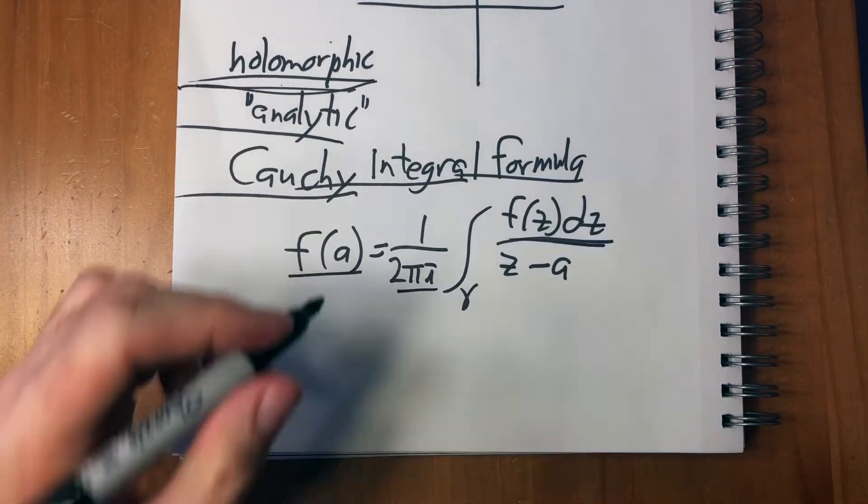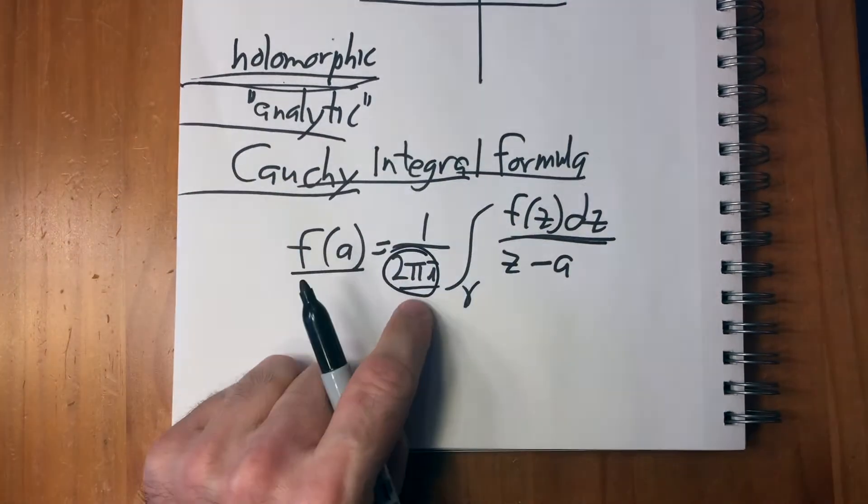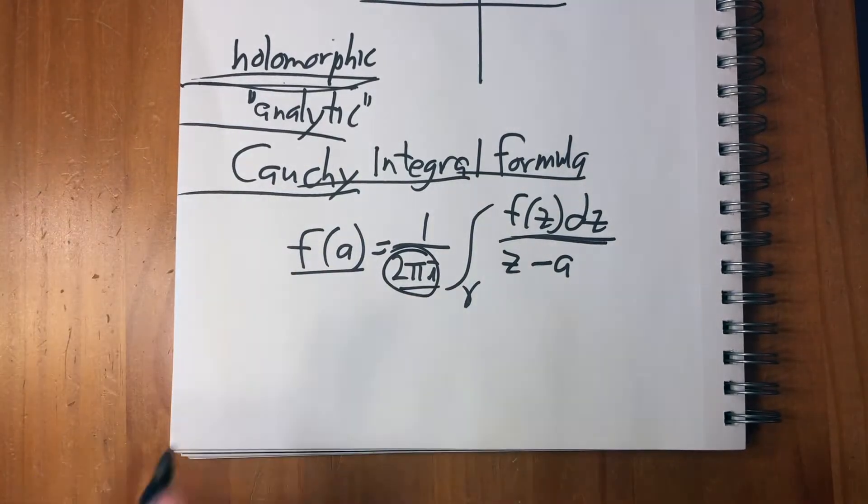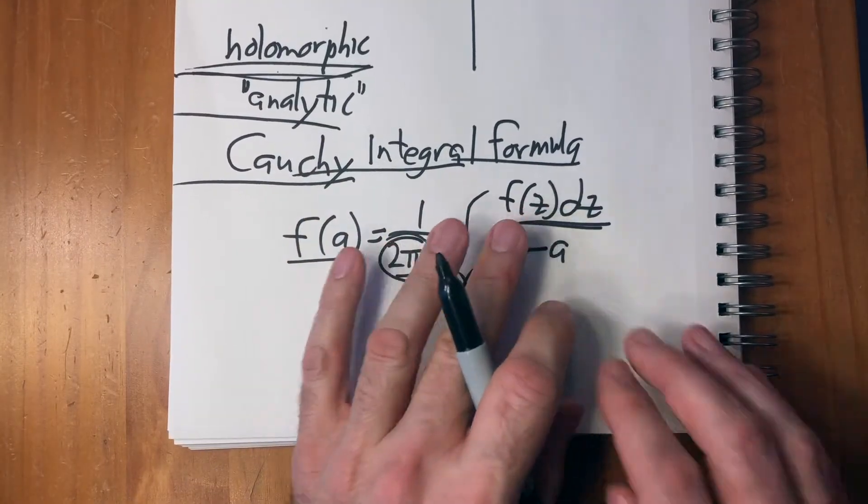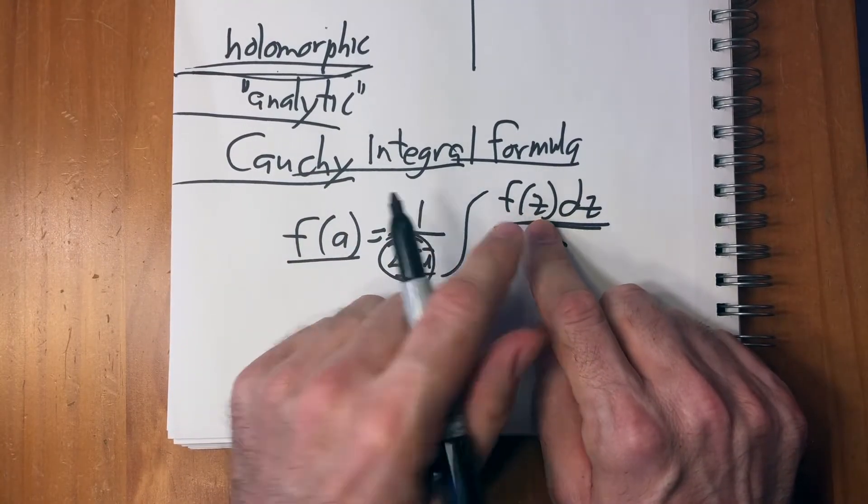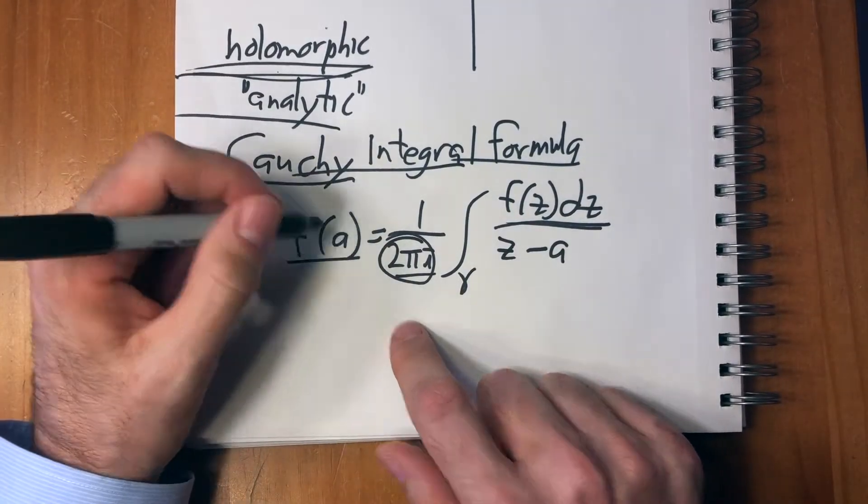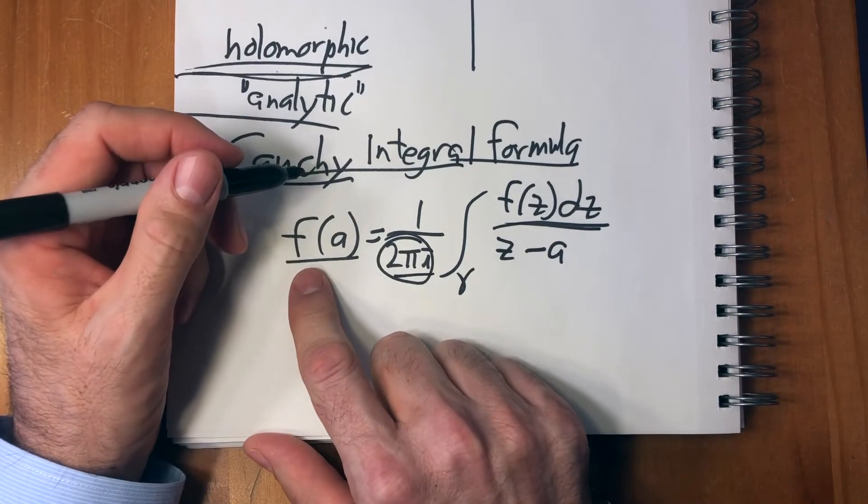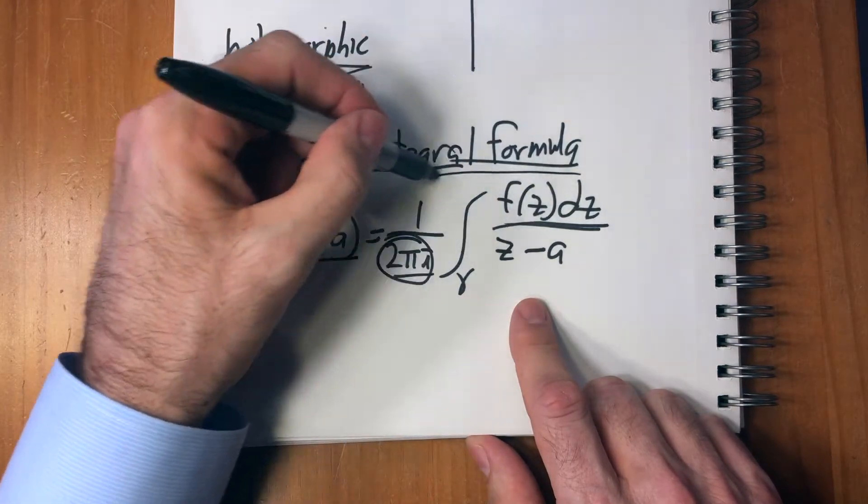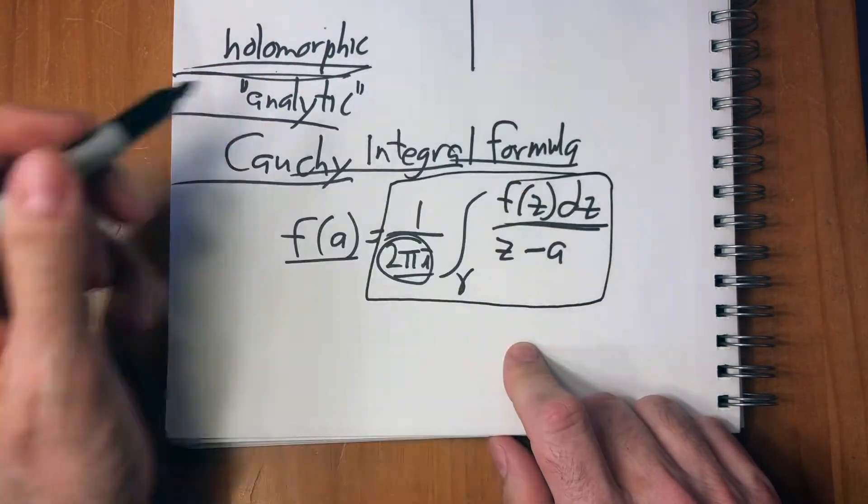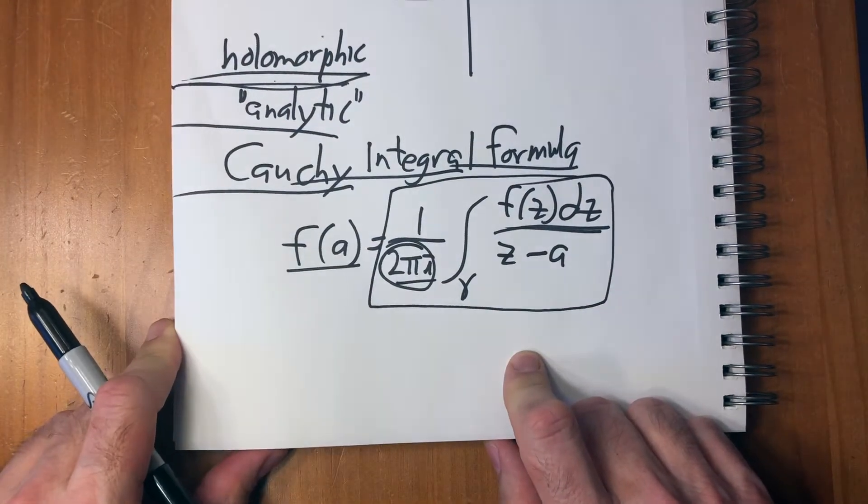So the first thing is that the two pi i, the reason that's there is just because we're talking about circles, which I'll show you in a second. What the Cauchy integral formula says is amazing. It says that if you have a function and you want to know the value of that function, then this integral will tell you the value of that function.